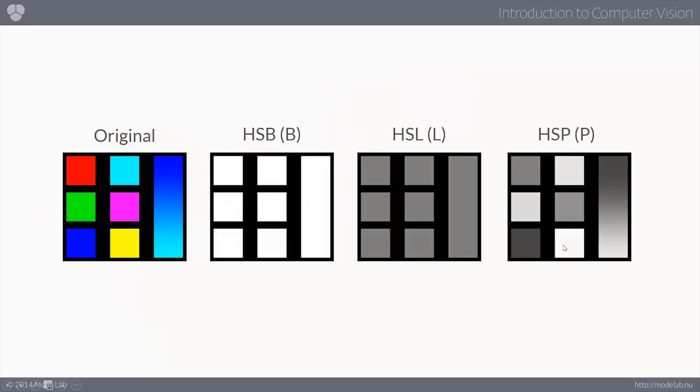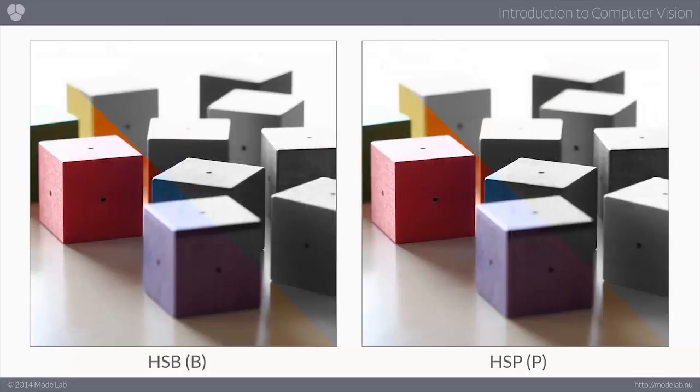And because we use that algorithm, in this case, the yellow is actually slightly brighter than the blue value, and green is slightly brighter than blue, as well as red. So the HSP model gives us a little bit of variation, but to our eyes, it reflects a more accurate rendition of the brightness value.